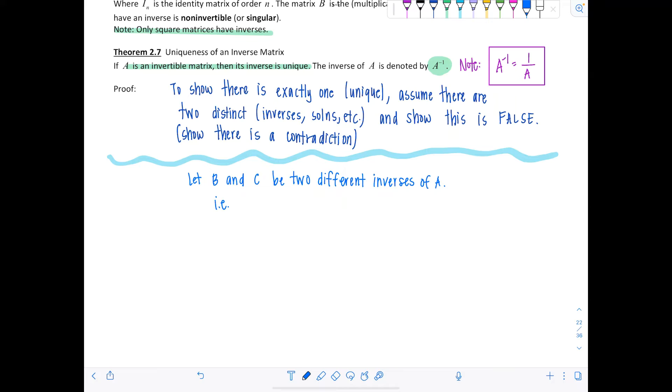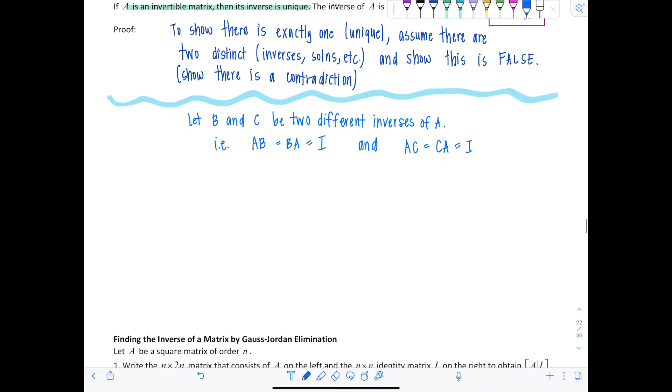So I'm assuming that there's two different inverses. What does that mean? That would mean that A times B is equal to B times A, which is equal to that identity matrix. Now if I'm assuming A times B equals the identity matrix, then it must be true if I multiply both sides by matrix C as well. So C times AB equals C times the identity matrix.